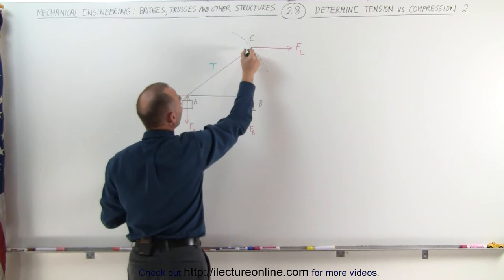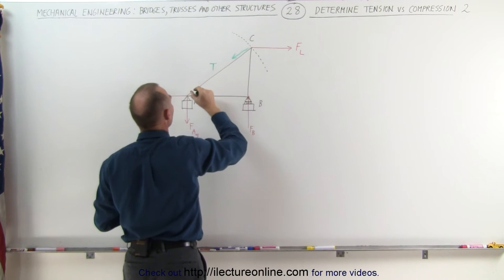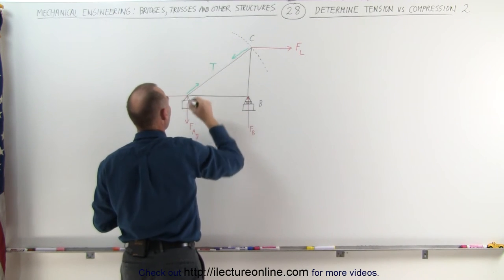This beam is under tension, that means it must be pulling on the member in this direction at that end, and it must be pulling in this direction at that end.